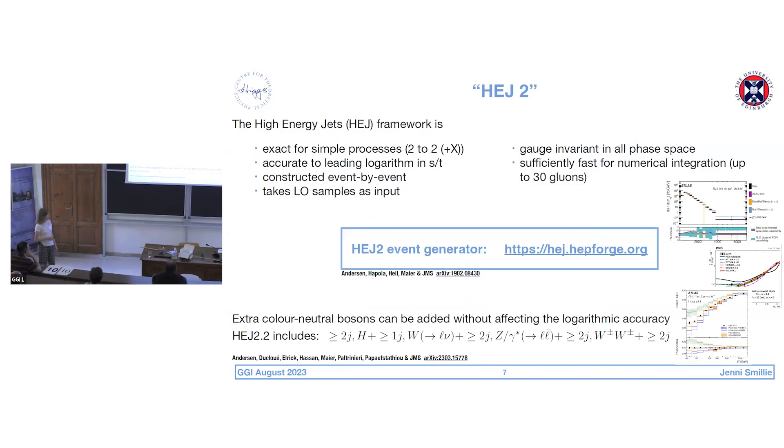So here's the advert for the public code. It is fully public. As of earlier this year, with the HEJ 2.2 release, we have really thorough documentation now. There are a lot of examples, lots of benchmarks you can play with and apply yourself. And I mentioned that we can do this for processes with color-neutral particles. The full list of the available processes is along here, and I'll discuss some of the more recent ones today.